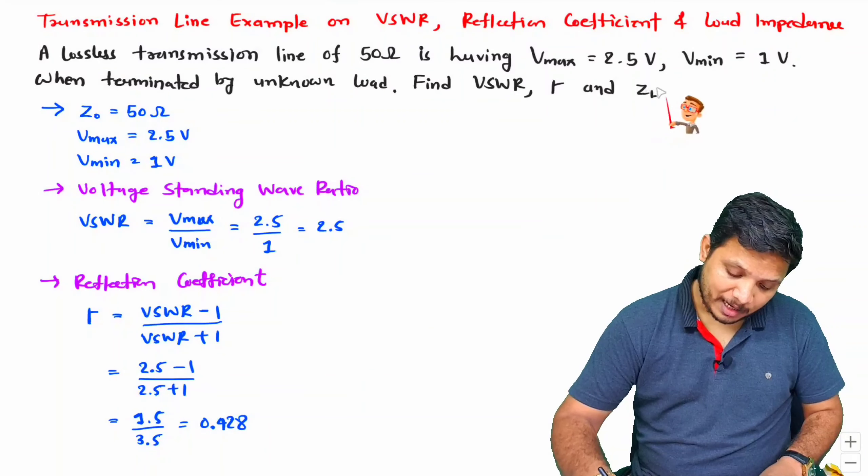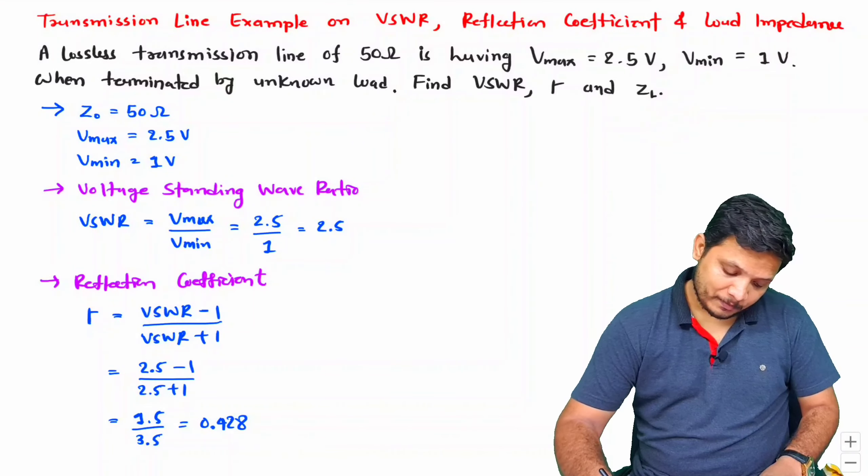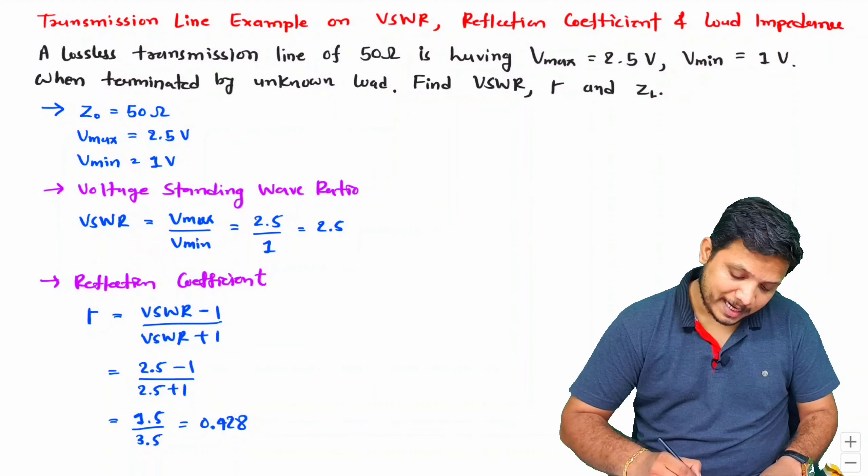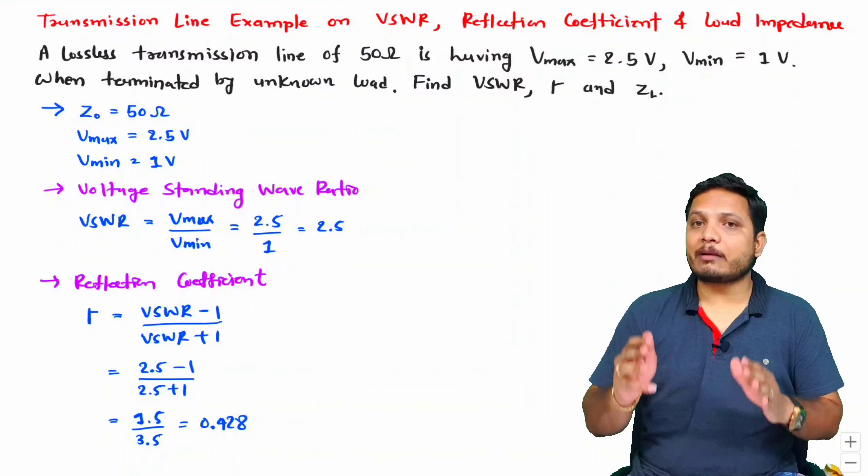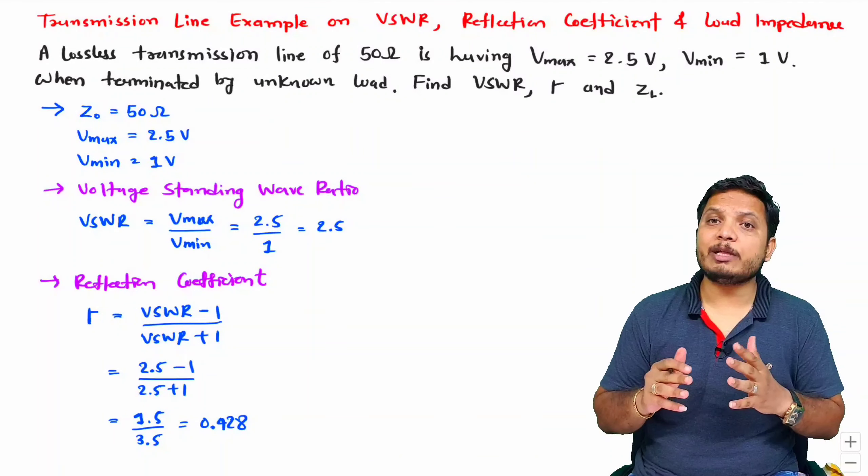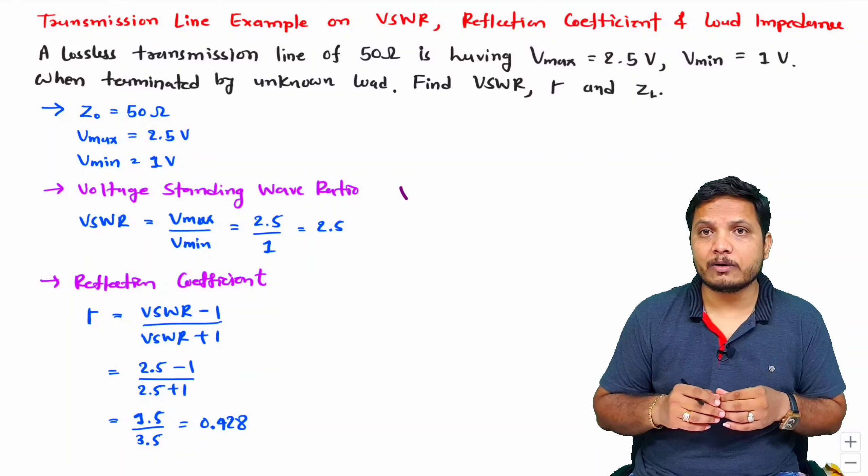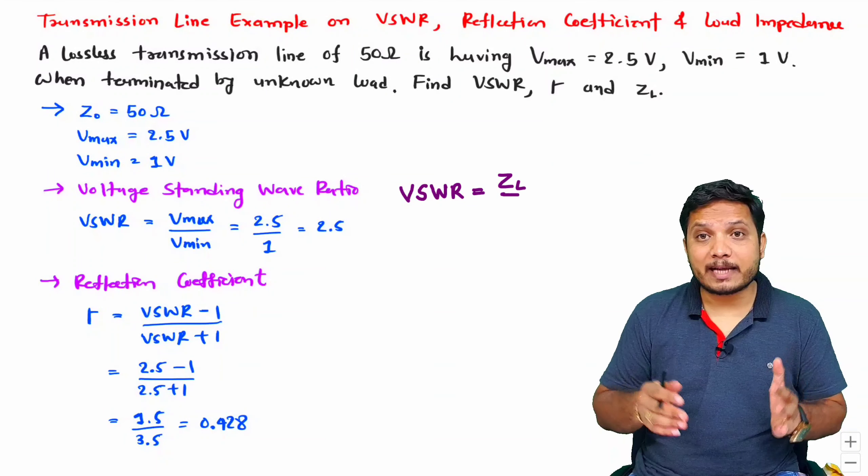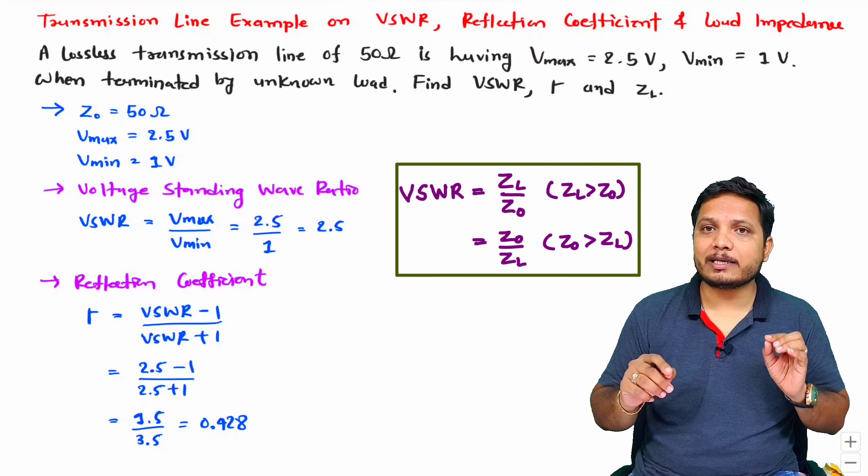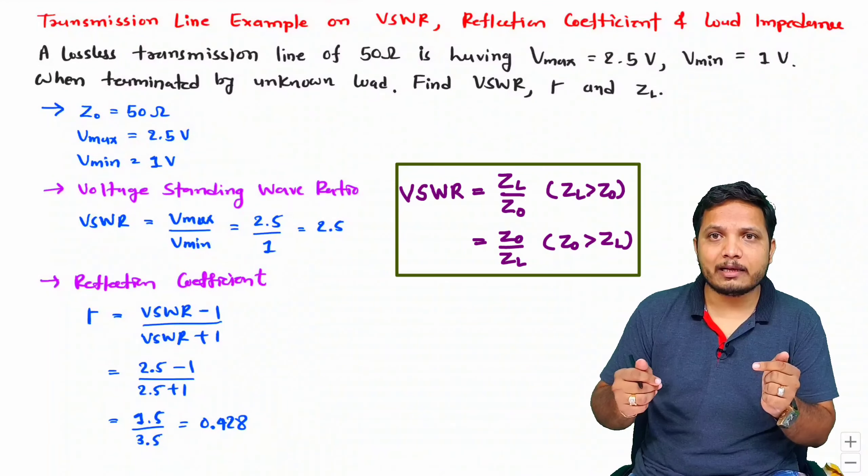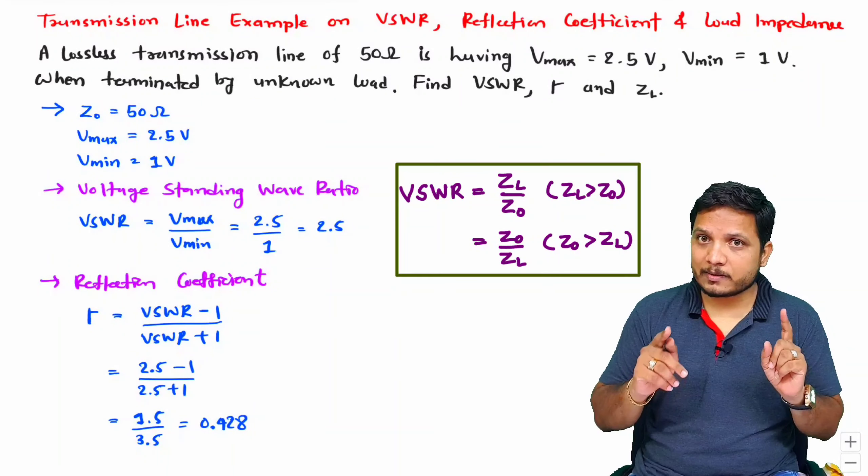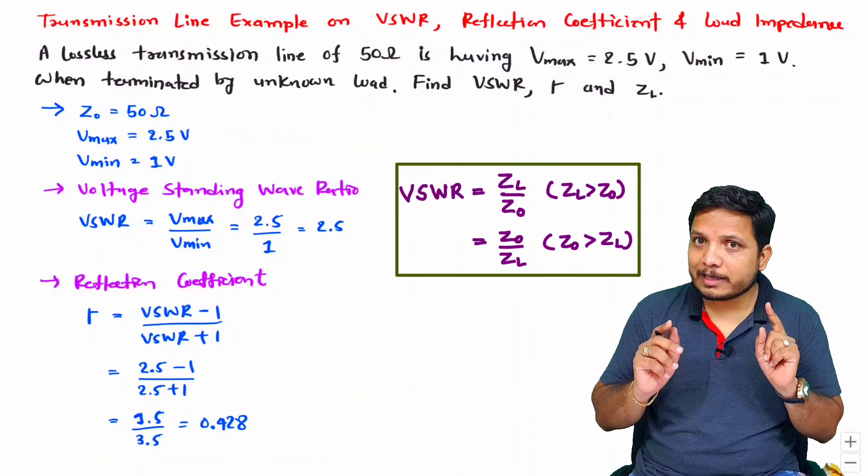Now the third parameter we need to identify is ZL. We have VSWR and reflection coefficient, so we can have ZL. There are basically two equations we can use: VSWR equals ZL divided by Z0 provided ZL is greater than Z0, and VSWR equals Z0 divided by ZL provided Z0 is greater than ZL. This is one way to calculate ZL.